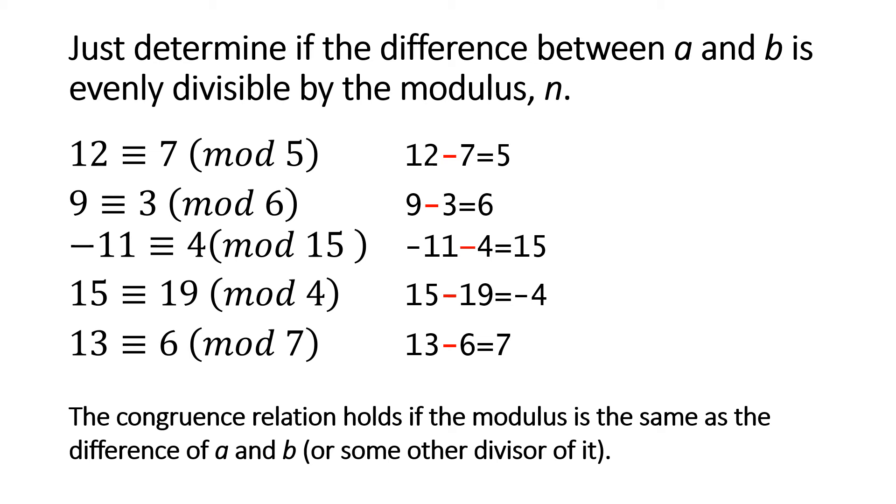So you got the idea. You can, given a and b, calculate n very easily, or given a and n you could calculate b, or b and n you calculate a. The congruence relation holds if the modulus is the same as the difference of a and b or some other divisor of it. That's the rule there, simple.